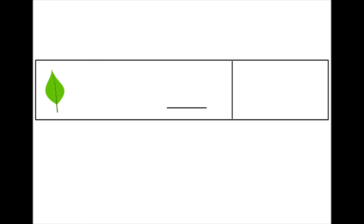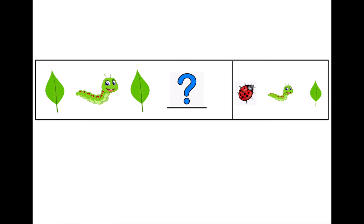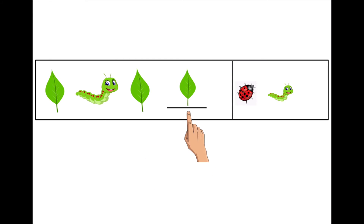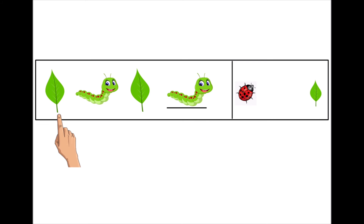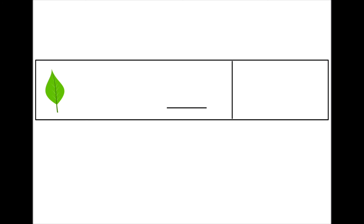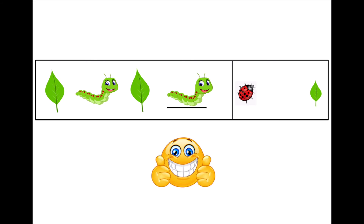The next one is a leaf, a caterpillar, leaf... what's next? Is it a ladybug? Leaf, caterpillar, leaf, ladybug? No. Is it a leaf? Leaf, caterpillar, leaf, leaf? Nope. Is it a caterpillar? Leaf, caterpillar, leaf, caterpillar? Very good! We have the sequence: leaf, caterpillar, leaf, caterpillar. Let's circle the caterpillar. Good job!